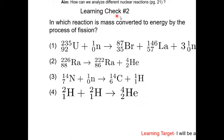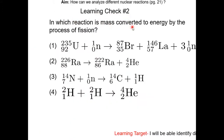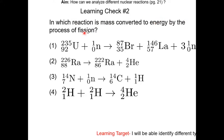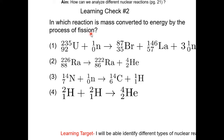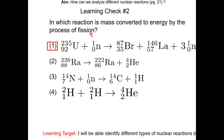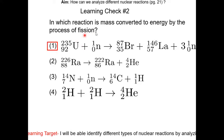Learning check number 2: in which reaction is mass converted to energy by the process of fission? Pause the video and resume when completed. The answer is choice 1, because you are going from a heavier nucleus to lighter nuclei.